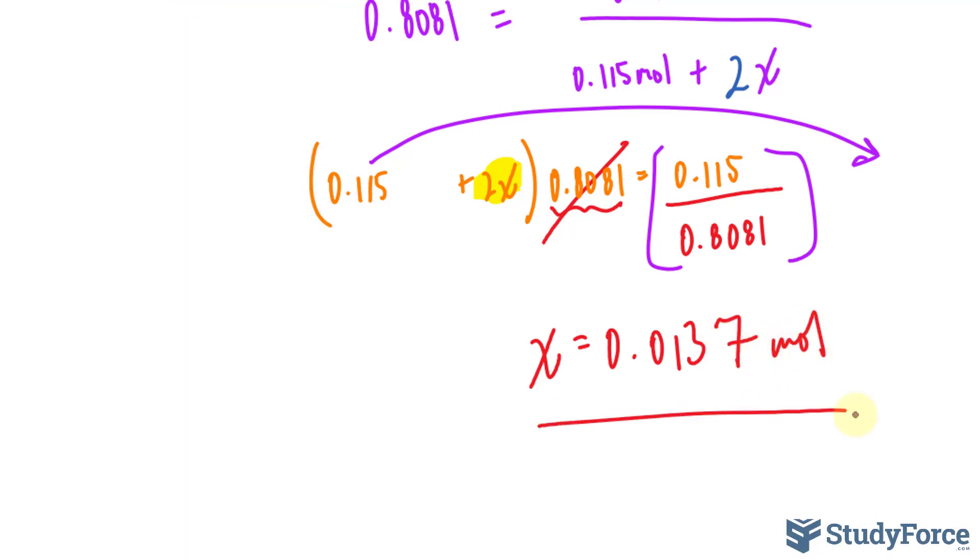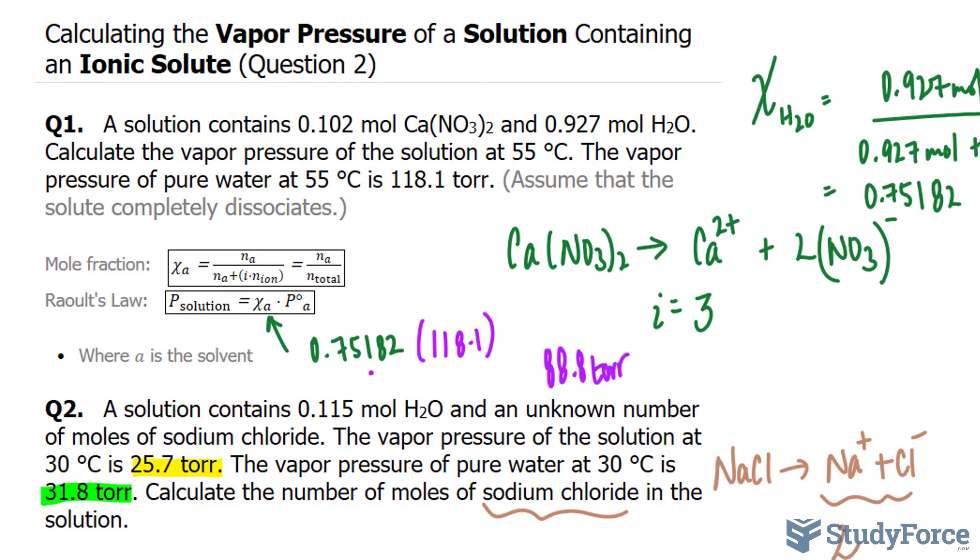So that number right there represents the number of moles of sodium chloride, and that is how to calculate vapor pressure of a solution containing an ionic solute.